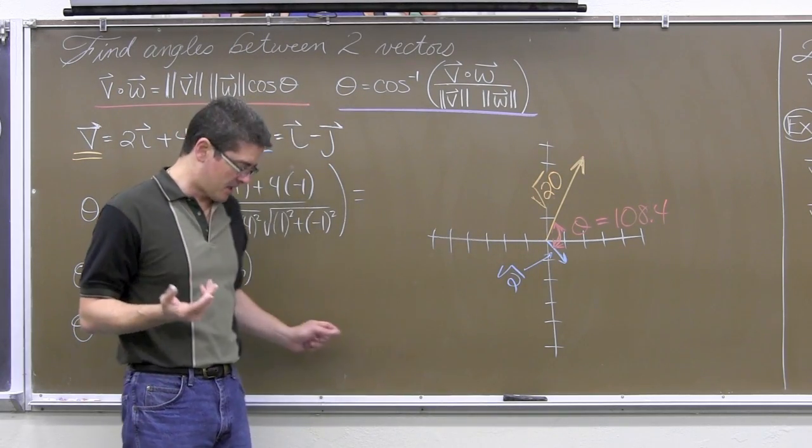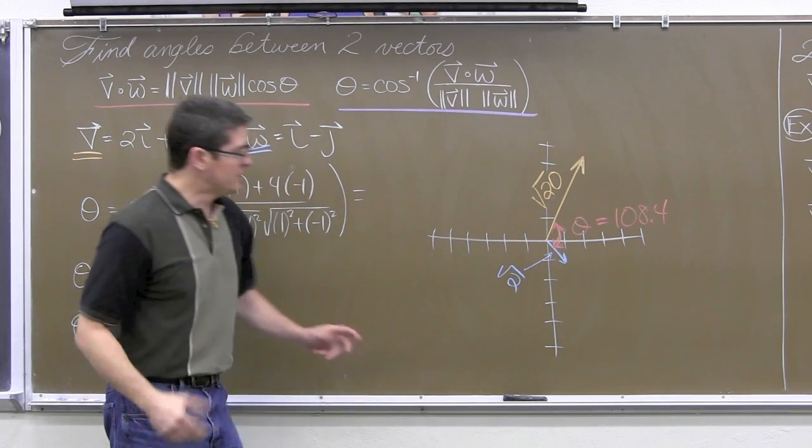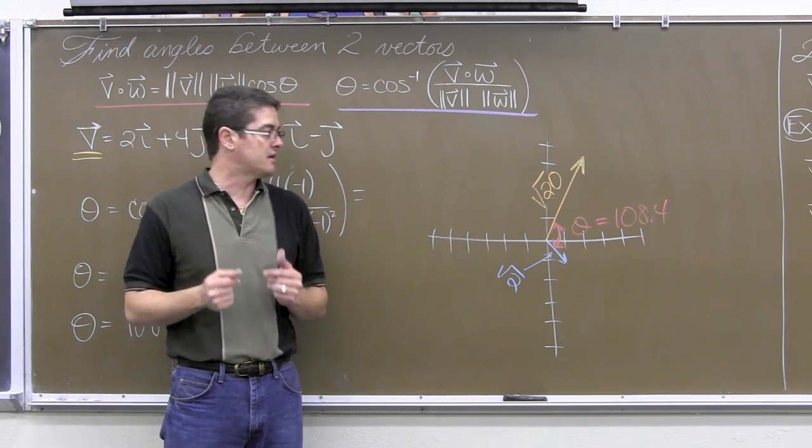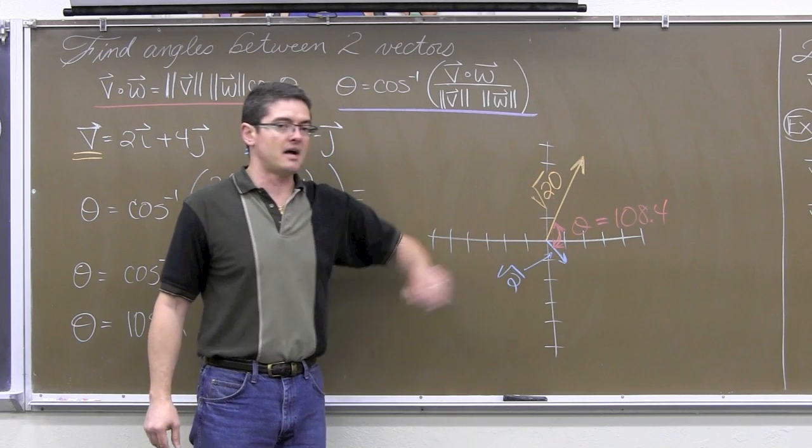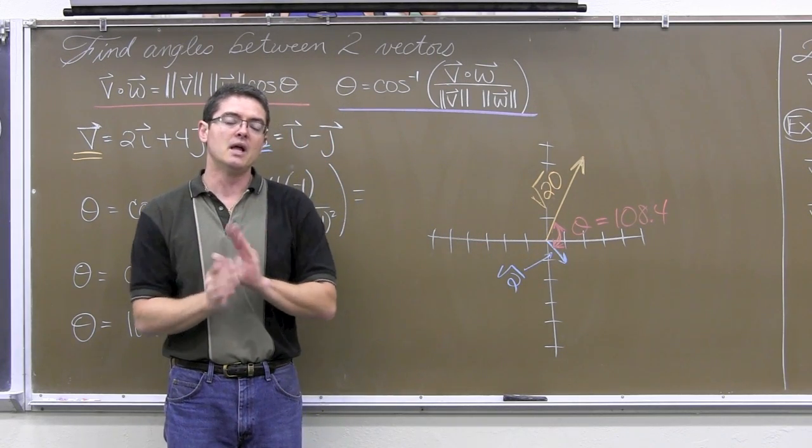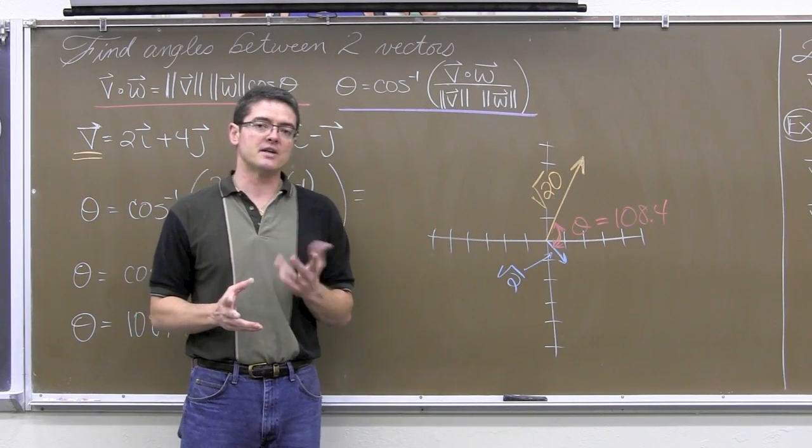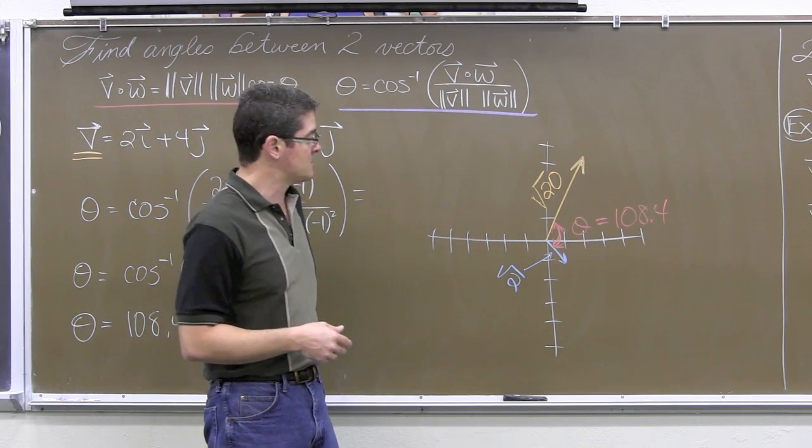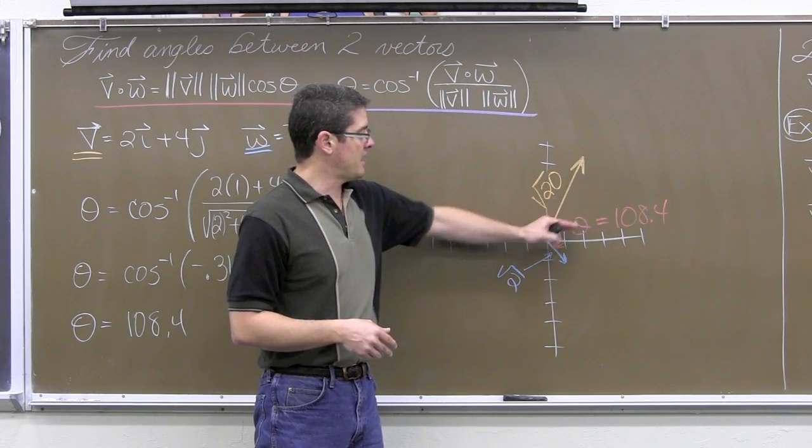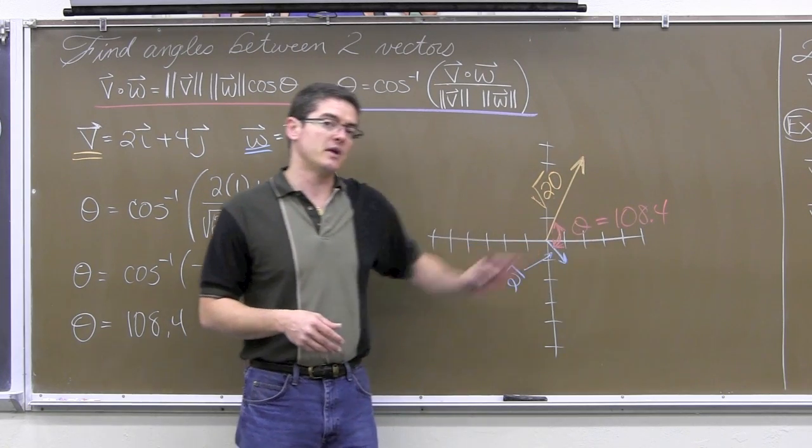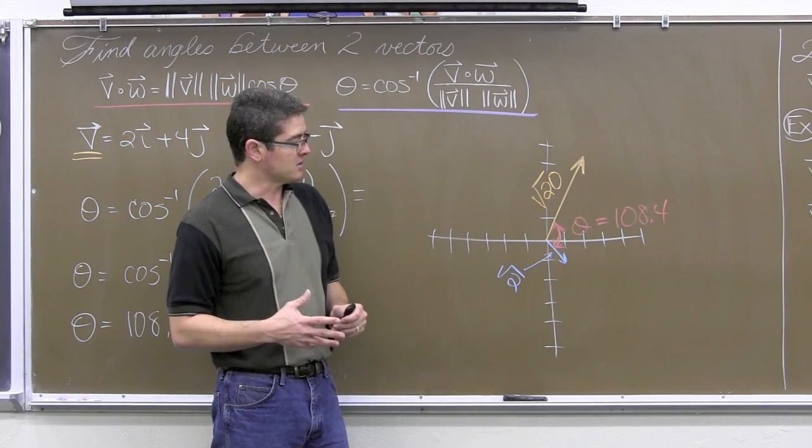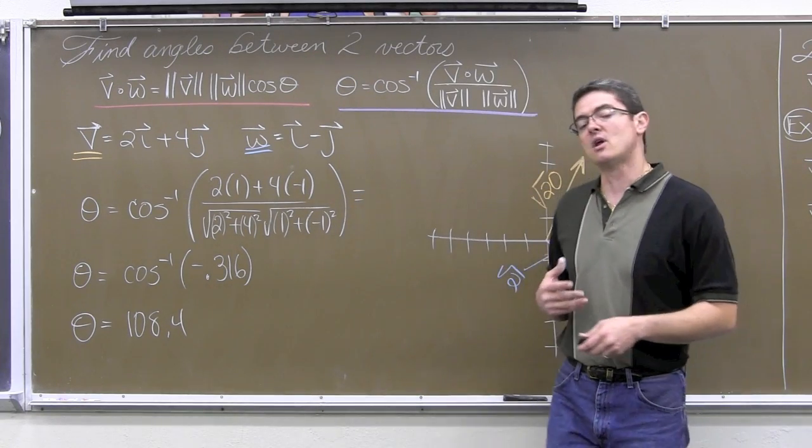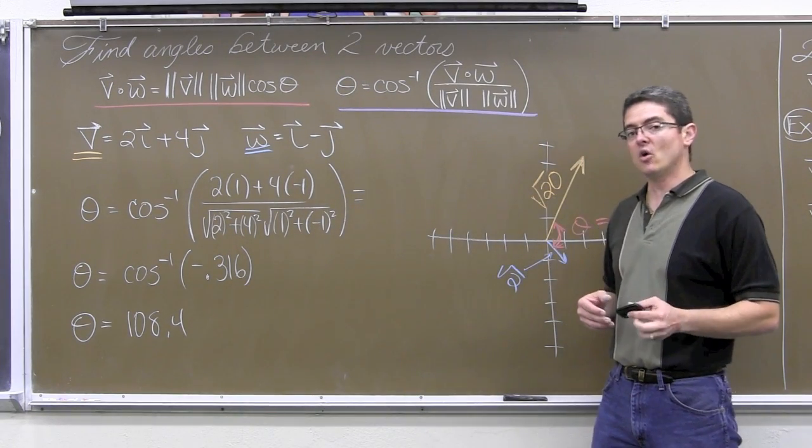This angle right here is what we just figured out to be 108.4. Well, if we are looking for that angle between the vectors, we have enough information to find the magnitude of v. And indeed the magnitude of v, that is 2 squared is 4, 4 squared is 16. So, this length is the square root of 20. And this other vector with just the a and b values of 1 and negative 1 has a length of square root of 2. So, if you just got studying the law of cosine, you knew that...